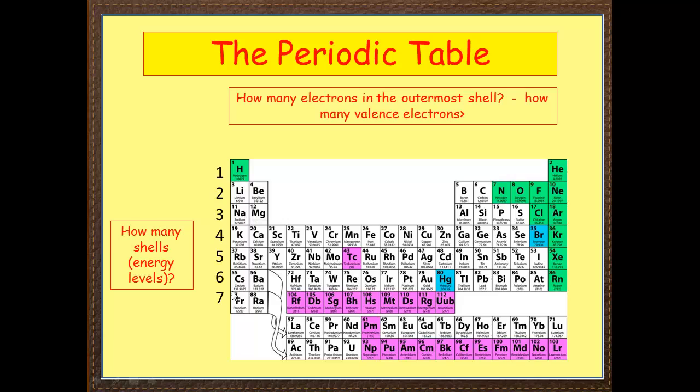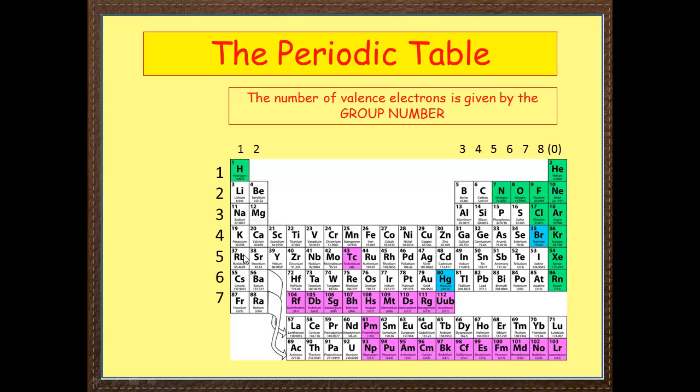Now, these are really, really useful. Because we want to know how many electrons are there in the outermost shell, and how many valence electrons. Also, we want to know how many shells or energy levels there are. And we can tell all this from the periodic table, and it is very, very easy.